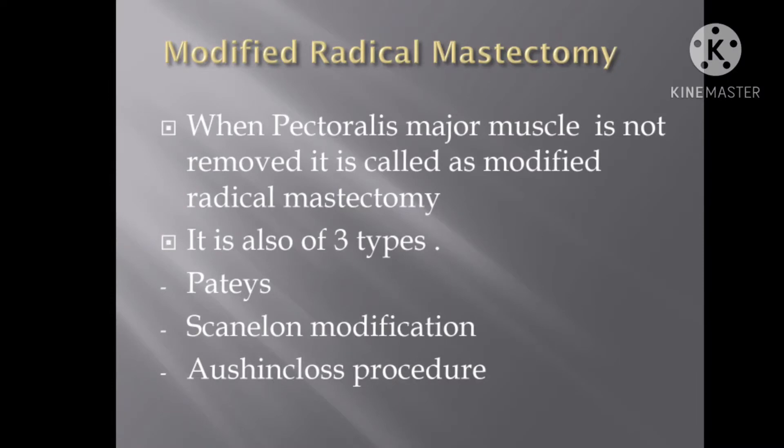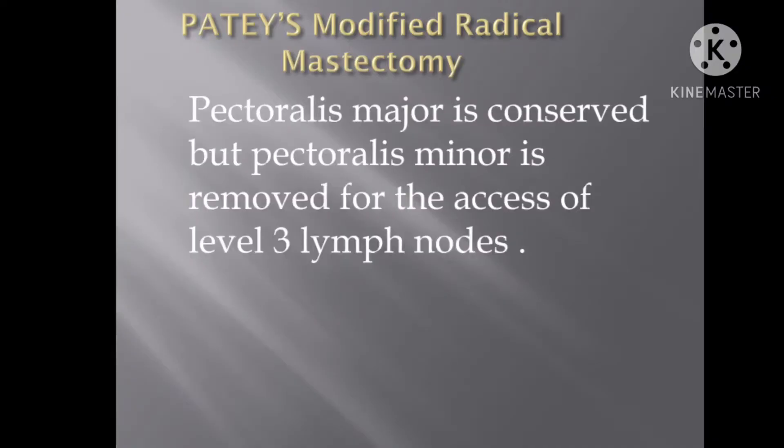This gave rise to a modification known as Modified Radical Mastectomy, which has been further divided into three types. The first modification was the Pettis Modification, where the pectoralis major was not removed at all, since its removal caused a lot of dysfunction. Only the pectoralis minor was removed, so that the level 3 lymph nodes, which are medial to the pectoralis minor, could also be retrieved.